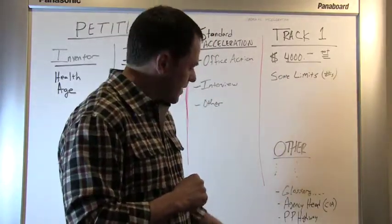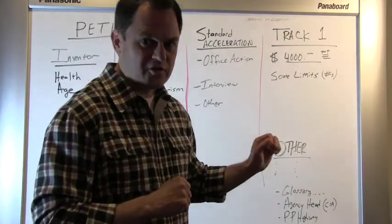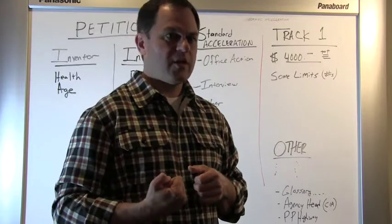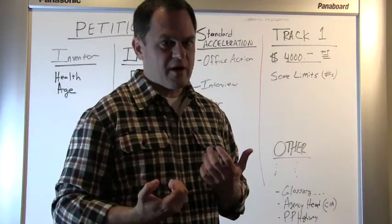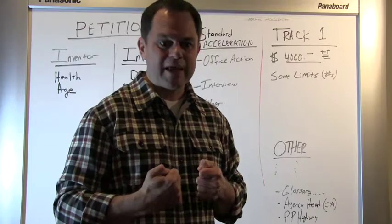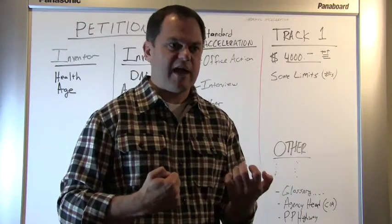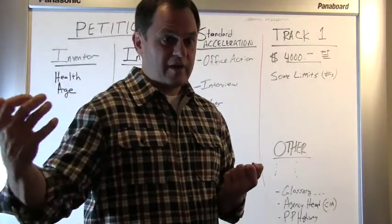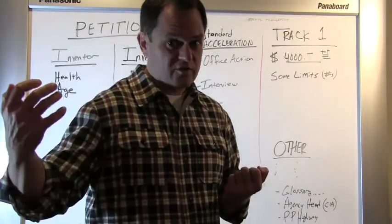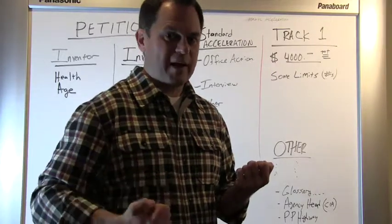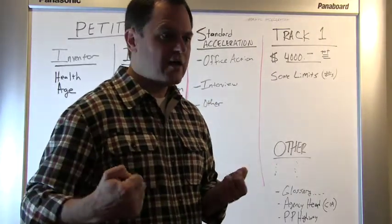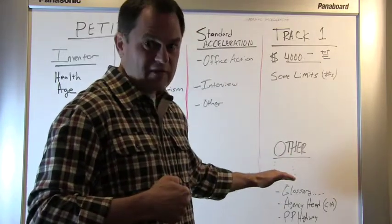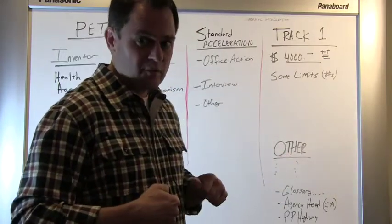Yet another other way to accelerate a patent applications examination is something called the patent prosecution highway. This typically involves foreign prosecution, but it's worth bringing up. So for example, if you have an application pending in both the United States and say Canada, and the Canadian patent office accepts and issues a patent on your patent application that's pending in Canada, you can then petition under this program to have your application examined in the United States more quickly.